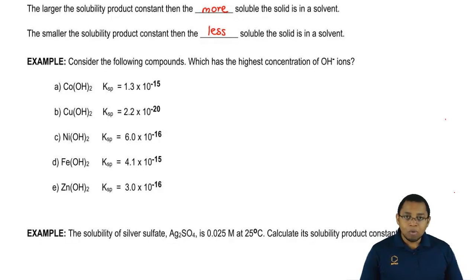Now, we're going to say example one. Consider the following compounds. Which has the highest concentration of OH- ions?